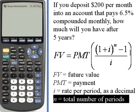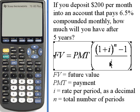Then we take that, subtract 1 from it, and divide that whole thing by i, which once again is the rate per period as a decimal.